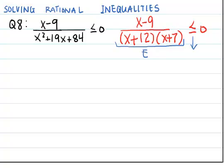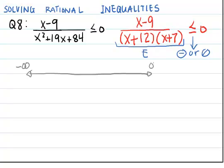Less than or equal to 0 means either negative or 0. I'm going to set up the sign table, which is a number line from negative infinity to infinity, with a row for each one of the factors in this fraction: x minus 9, x plus 12, and x plus 7. Each row shows the sign — positive, negative, or 0 — of that factor based on the value of x.